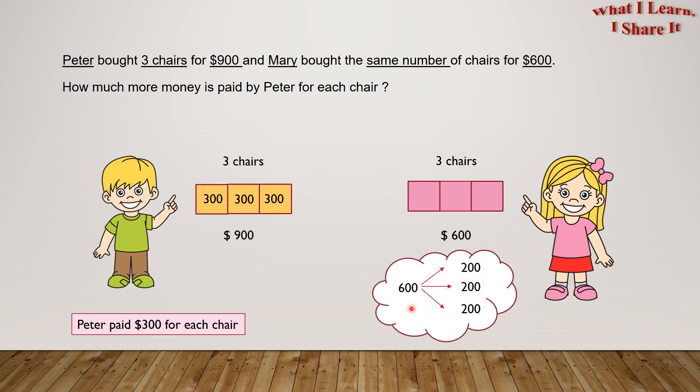In the same way, if $600 has to be divided into three equal parts, then each part will be $200. So Mary paid $200 for each chair.